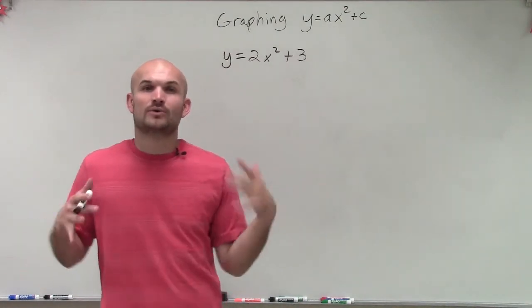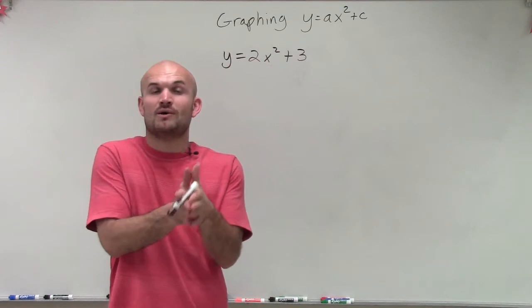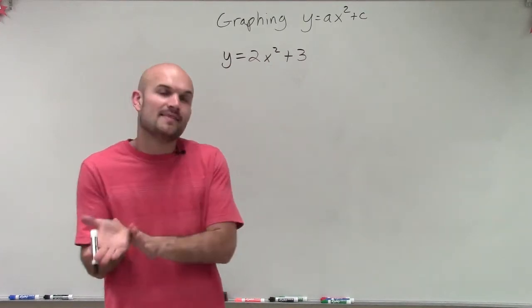And that's very important, because when we're going to create our table of values, we're going to want to make sure we always start at 0, and then choose two points to the left, and then two points to the right.